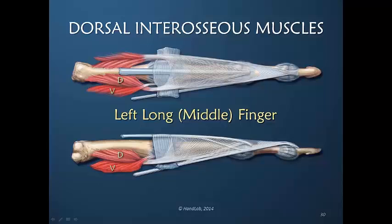The dorsal belly is called dorsal because it is indeed above or dorsal to the volar belly. What creates confusion is that they literally cross over one another, and the volar belly proceeds and inserts into the capsule and then ends into an insertion at the base of the proximal phalanx.